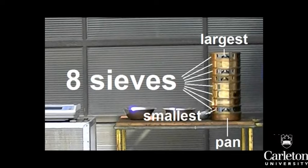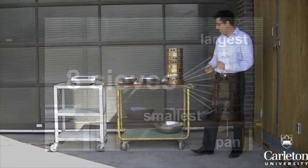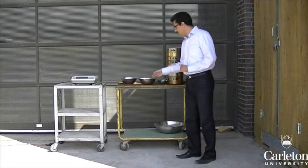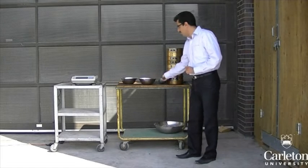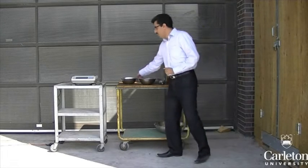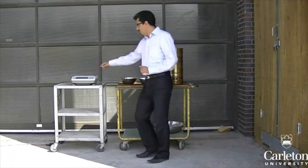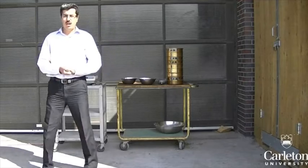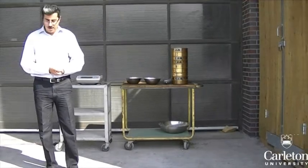Make sure that the sieves you are using are in order from largest at the top to smallest at the bottom. You will also need a few containers, such as these bowls, and a scale. Finally, you will need a shaker such as this one.